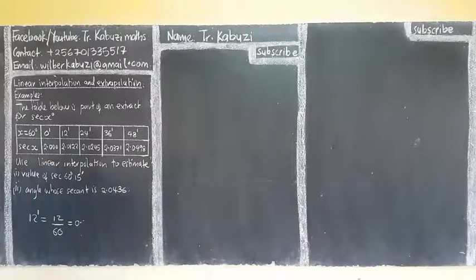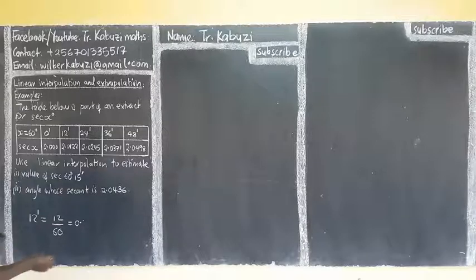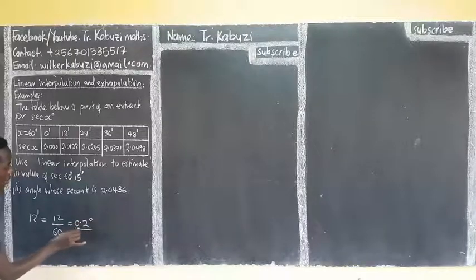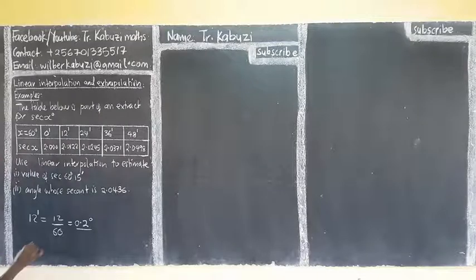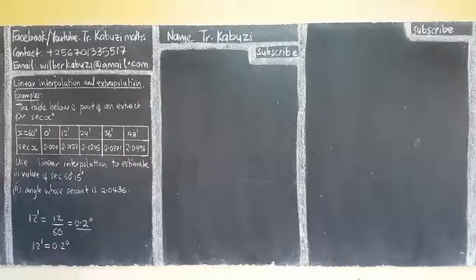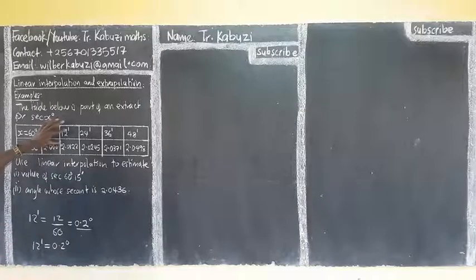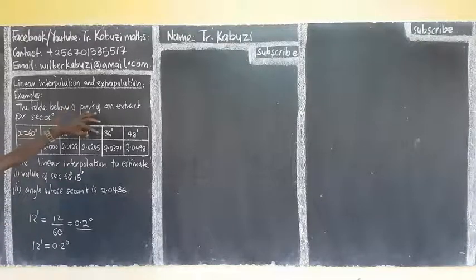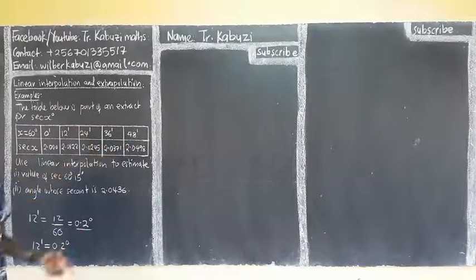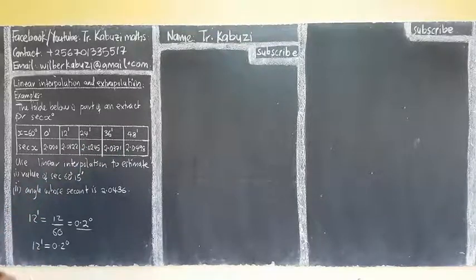When you divide 12 by 60, you get 0.2 degrees. So 12 minutes is the same as 0.2 degrees. In simple terms, these are degrees, but very small degrees, that's why they're converted to minutes. Don't get confused, this is just notation.